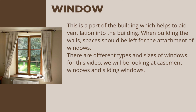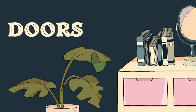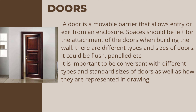Windows are parts of the building which help to aid ventilation. When building the walls, spaces should be left for the attachment of windows. There are different types and sizes of windows. For this video we will be looking at casement windows and sliding windows. Casement windows are windows that can be opened and closed like door shutters, while sliding windows are opened by sliding them horizontally. It is important to be conversant with different types and standard sizes of windows, as well as how they are represented in drawings.